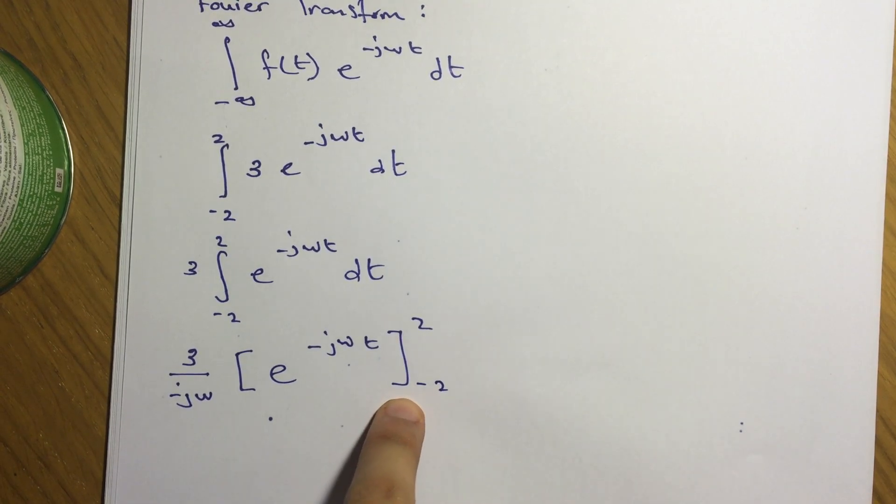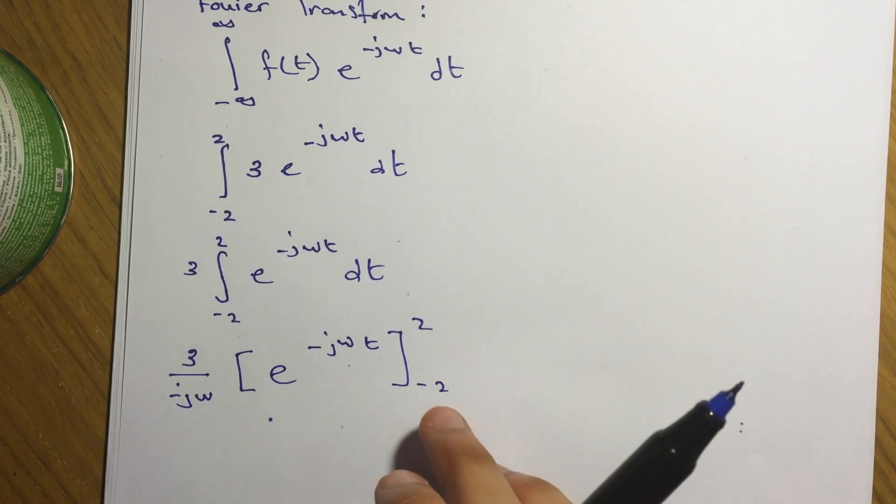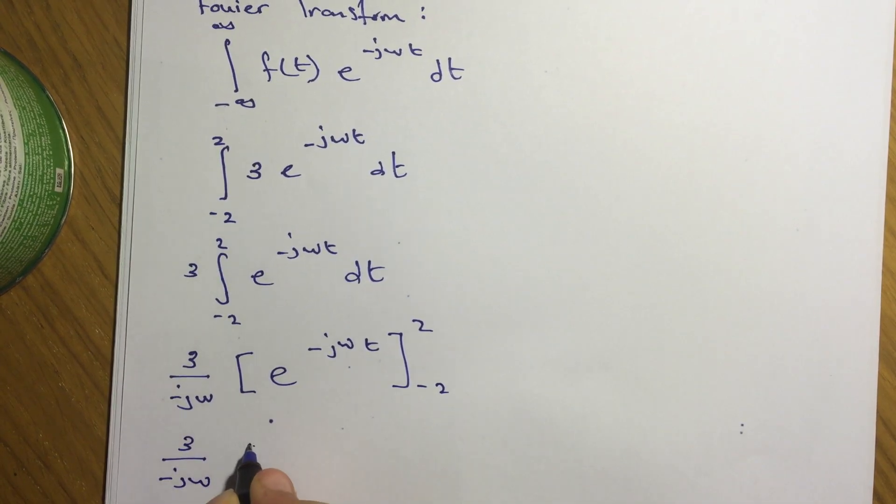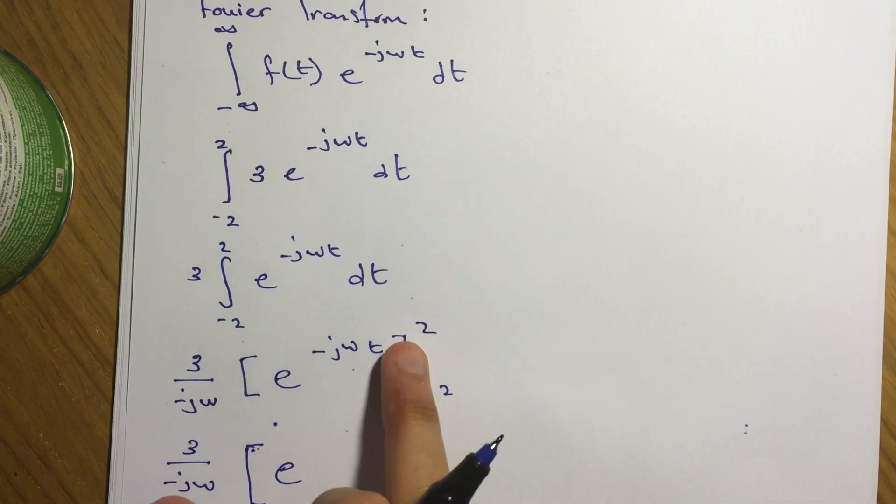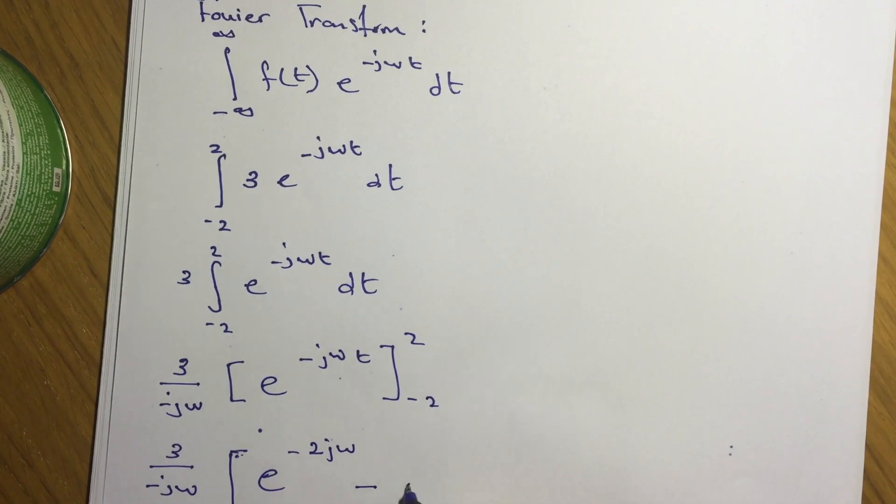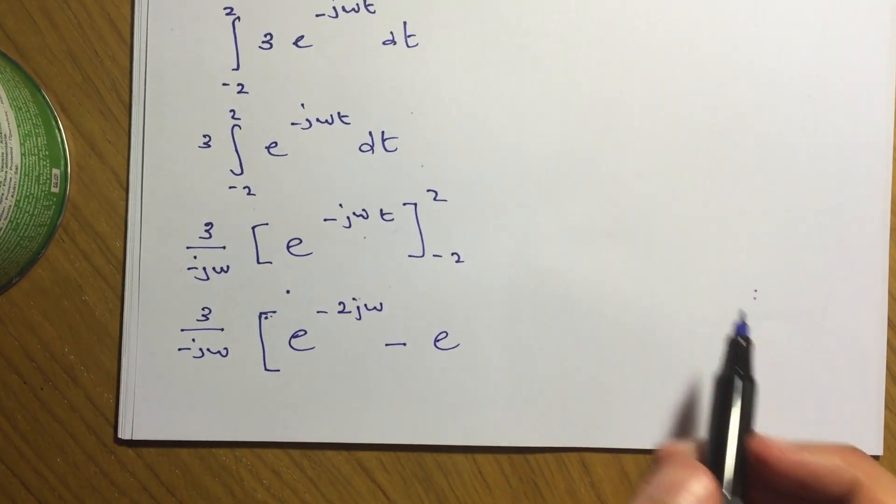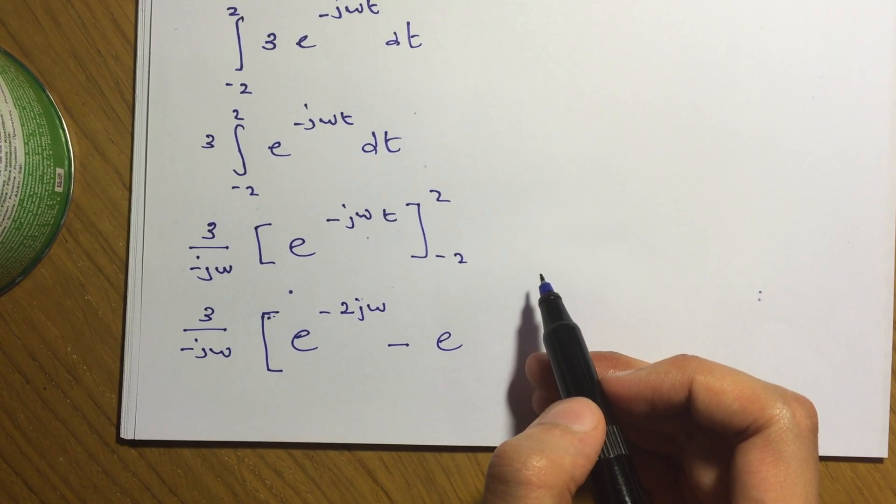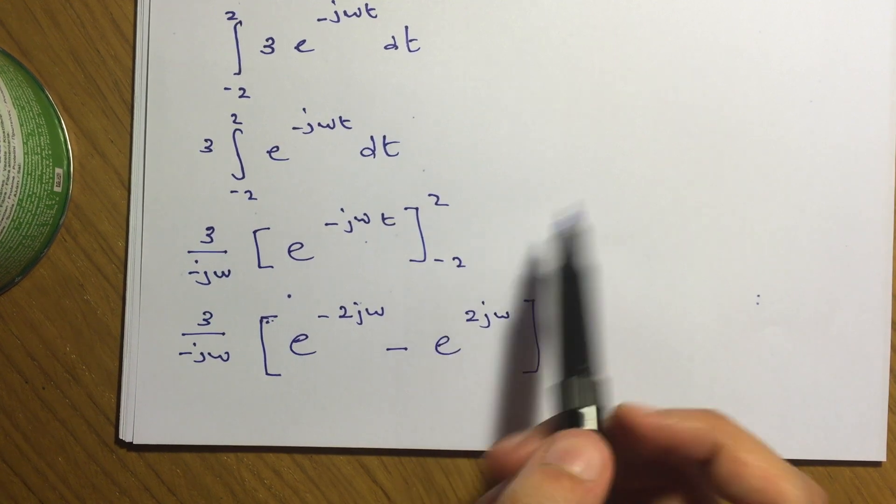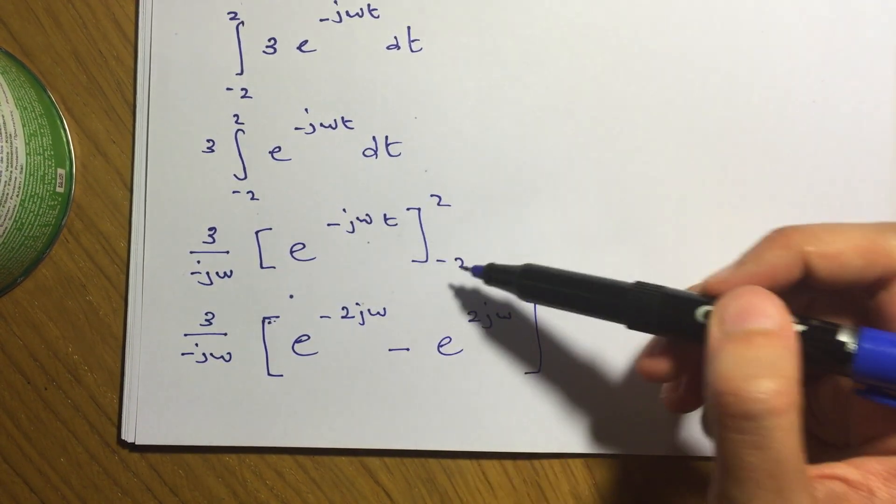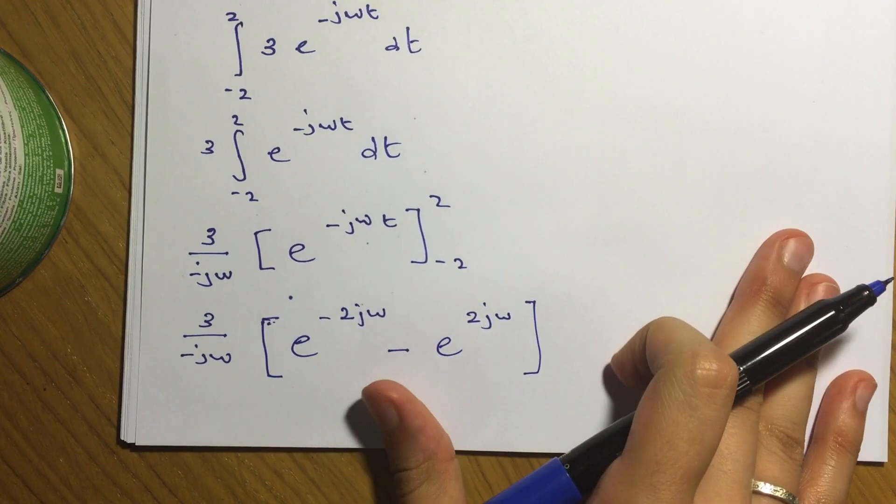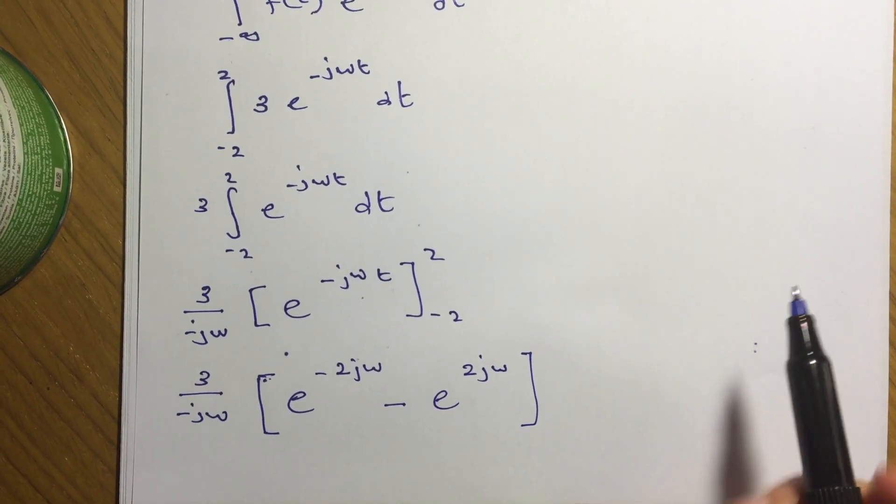So we have 3 over negative j omega times e to the negative j omega t, and the limits are negative 2 and 2. So we just apply the limit. So 3 over negative j omega times e to the negative 2j omega, minus e to the positive 2j omega. So when we apply the negative 2 here, it will cancel the negative, so it will give us a positive 2j omega.